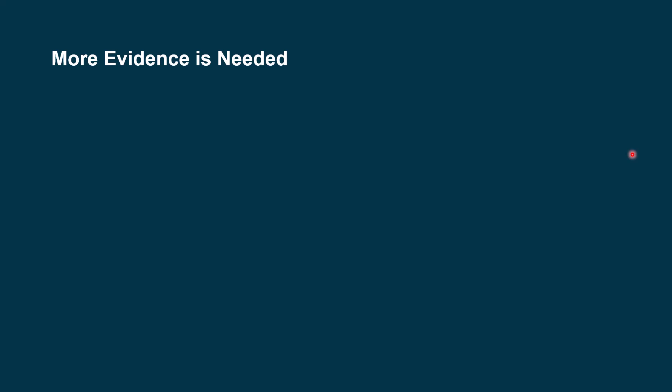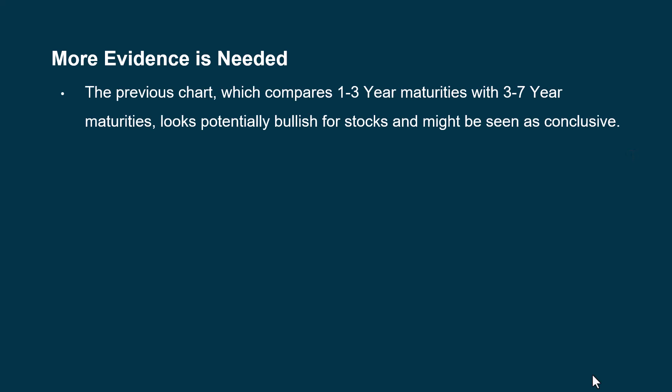But we need more evidence than this just to say the Fed is done, they're going to pause, or they're going to start cutting rates. You can get all kinds of opinions in the media. I like to look at the charts and then have that evidence presented to me, and then I can make a decision based on that. In the previous chart, comparing the one- to three-year maturity with the three- to seven-year maturity, it looks potentially bullish for stocks since the ratio is going down — but it might be seen as too conclusive on its own. This is a big part of my philosophy — I call it the consensus method.